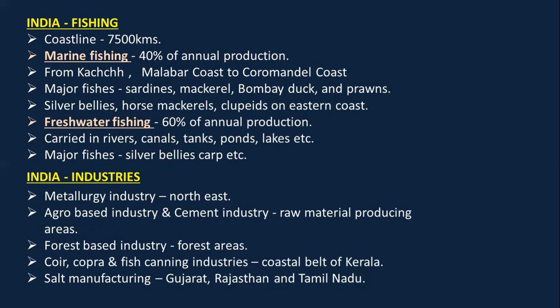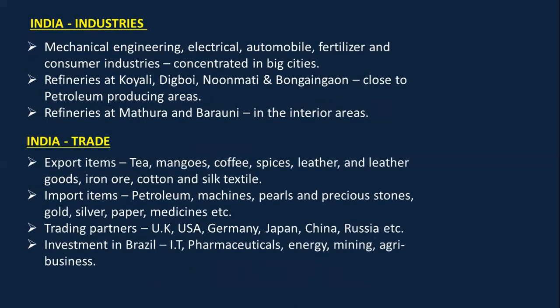Industries in India include metallurgy industry in the northeast, agro-based industry, and cement industry in raw material producing areas. Coir, copra, and fish canning industries are in the coastal belt of Kerala. Salt manufacturing is done more in Gujarat, Rajasthan, and Tamil Nadu. Other industries include mechanical engineering, electrical, automobile, fertilizer, and consumer industries in big cities.